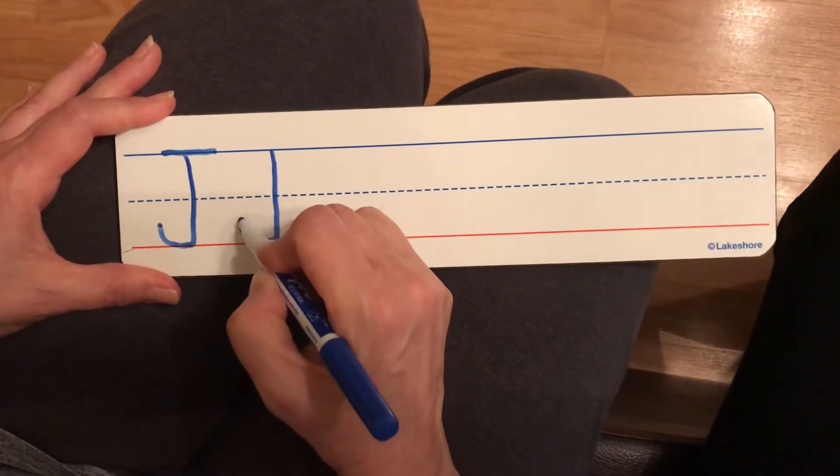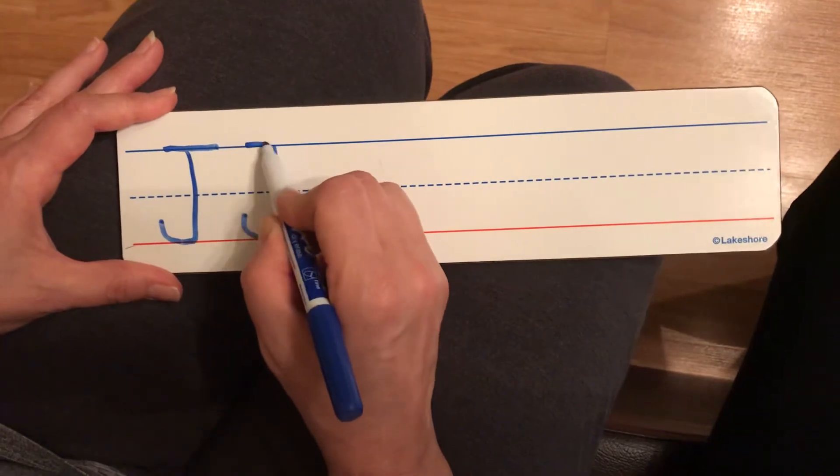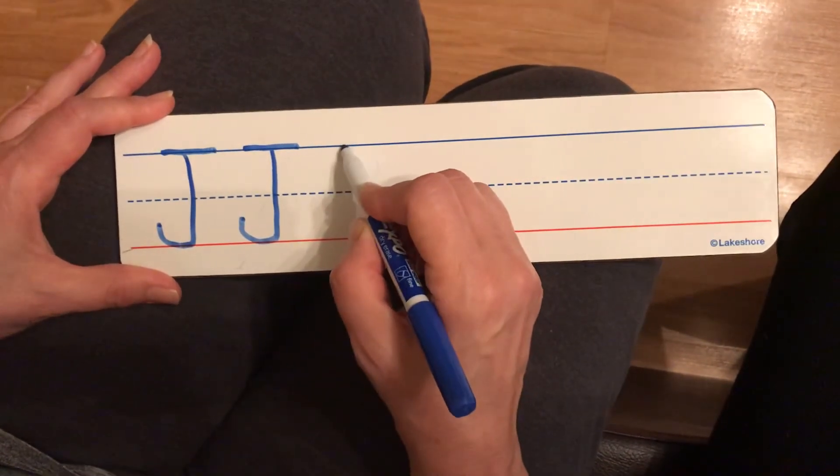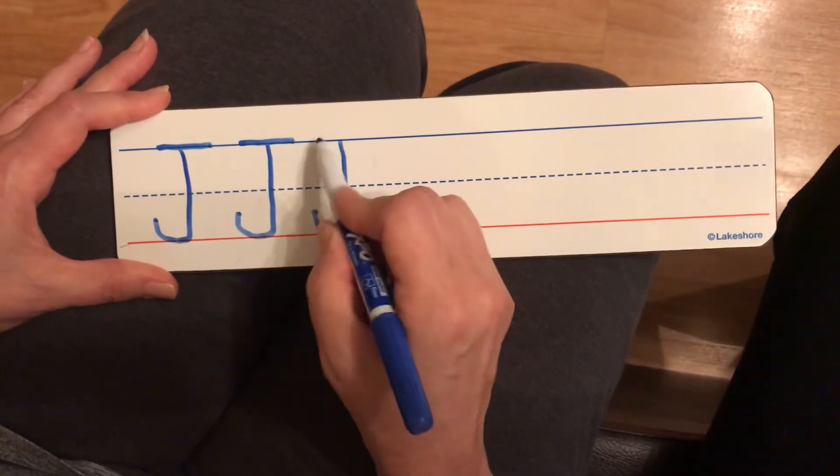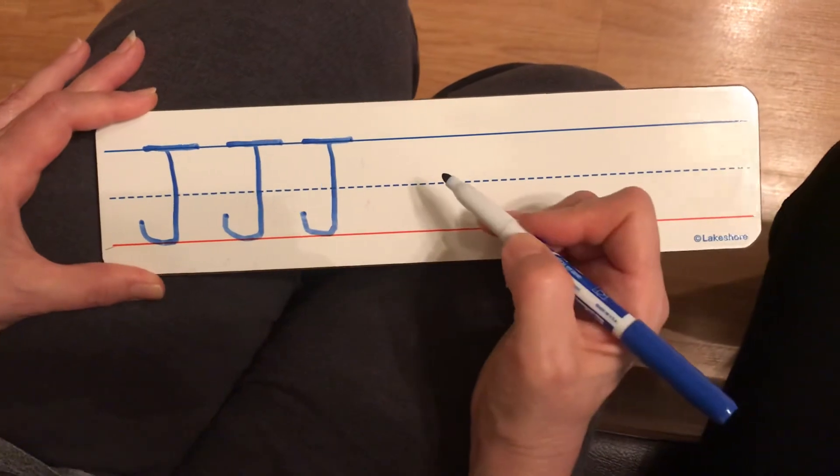We'll curve up and stop and a little line across the top. One more time. Big line down, curve up, and stop, and a little line across the top.